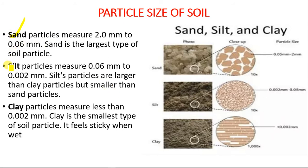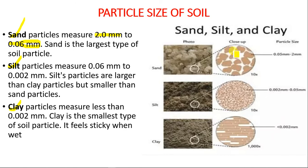Based on particle size, we have sandy soil, silt and clay soil. Sand particles measure between 0.06 and 2 millimeters — sand is the largest type of soil particle. Between each particle you can see the pore spaces formed for either water or air, which is why sandy soil has good drainage due to the large pore spaces that allow water to flow through.